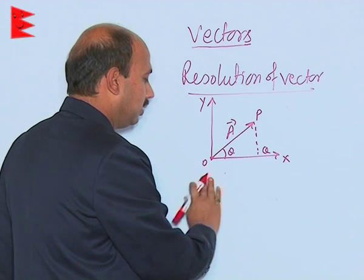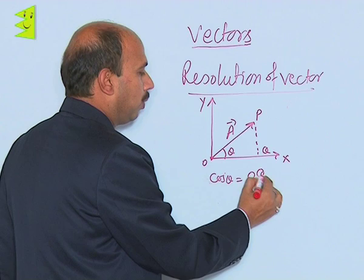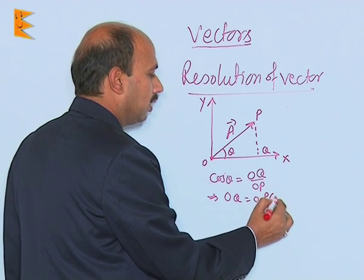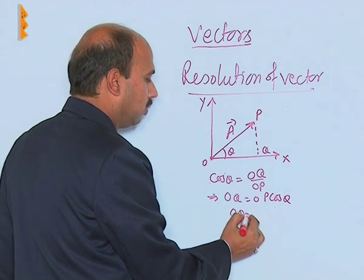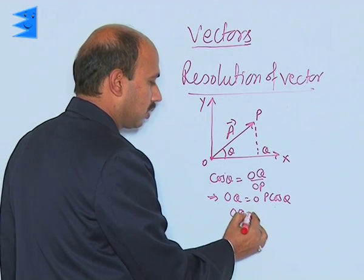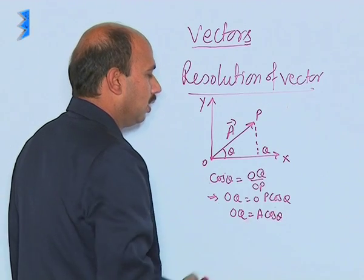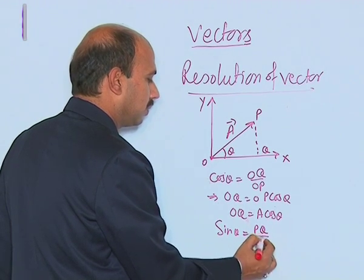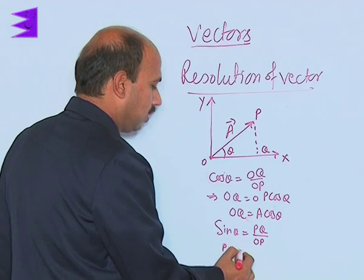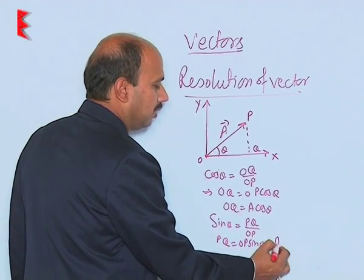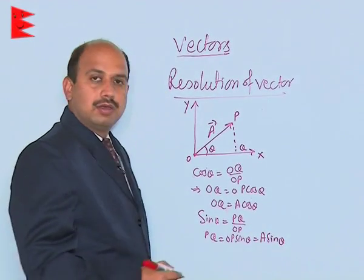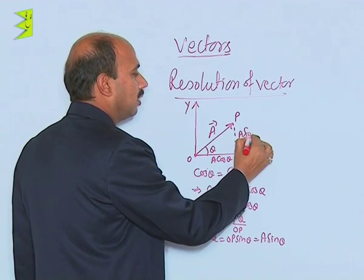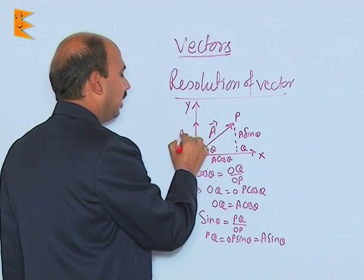For OQ, cos theta is equal to OQ upon OP, that means OQ is equal to OP cos theta, which can be written as OQ equal to A cos theta. Similarly, we can get sin theta: sin theta is equal to PQ upon OP, and here we can get PQ equal to A sin theta. So vector A has two parts — one is A cos theta to this side and one is A sin theta to this side.